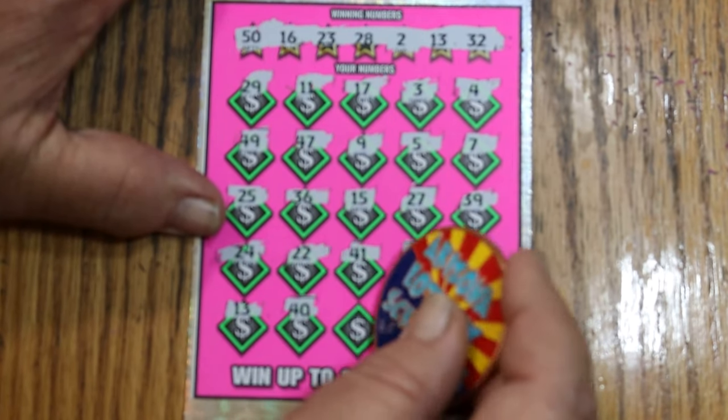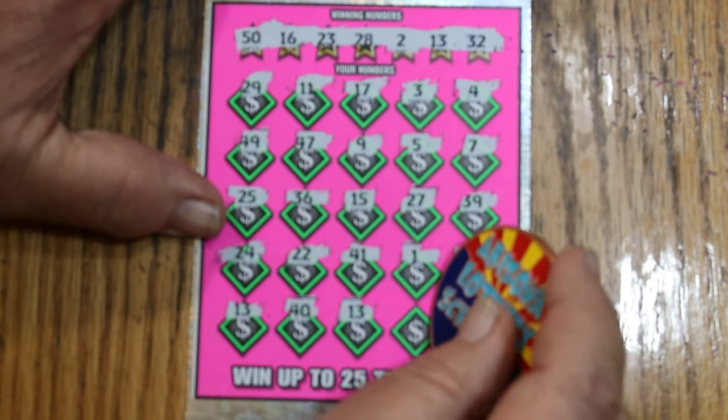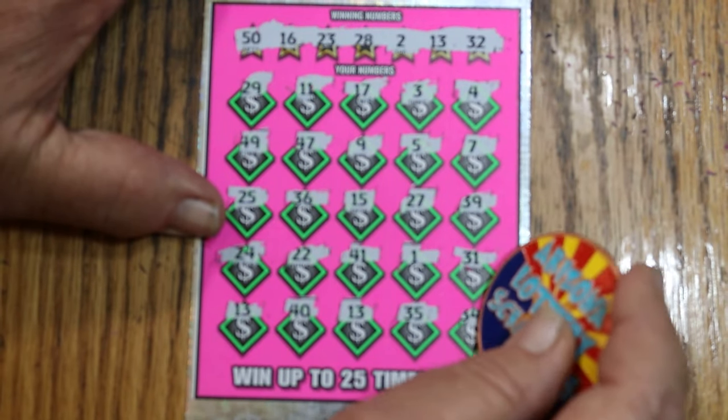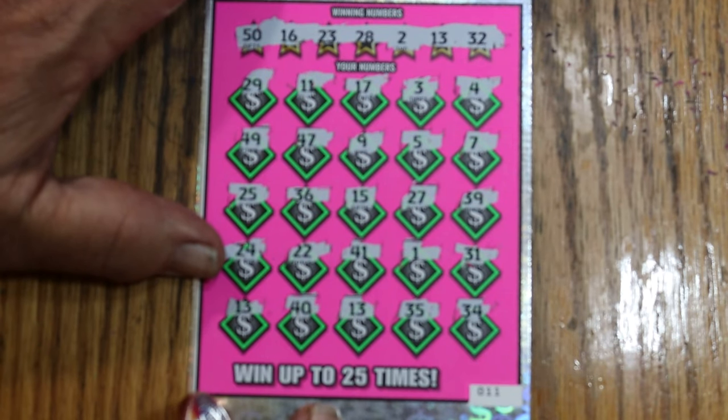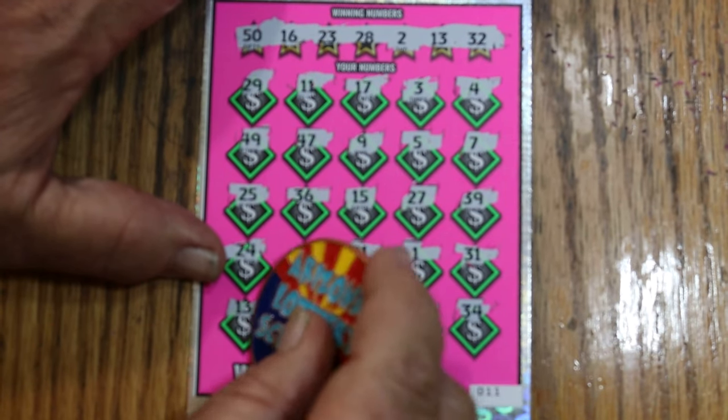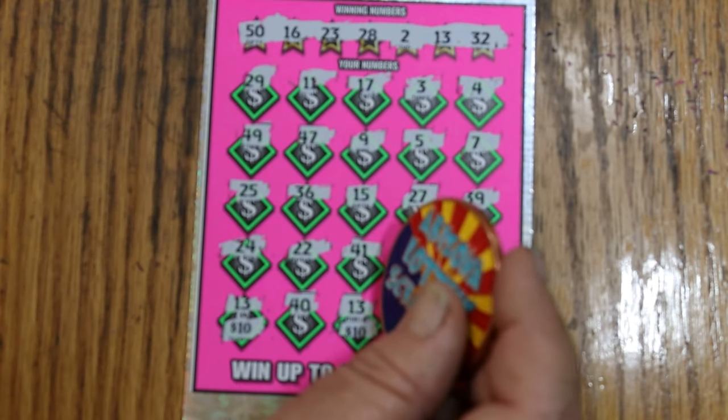40, another 13, 35, and 34. Okay. 2 thirteens. What are we going to get here? 10, 10 for 20. Hang on. All right, well.